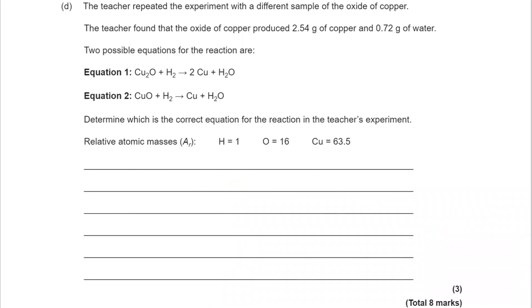For part D, the teacher repeated the experiment with a different sample and found that the oxide of copper produced 2.54 grams of copper and 0.72 grams of water. We're given two equations and relative atomic masses. How do we determine which is the correct equation? Which copper oxide, Cu2O or CuO, was used?